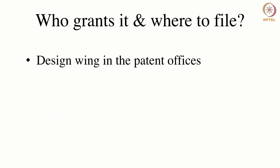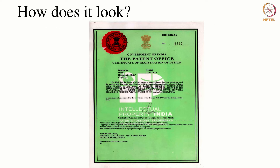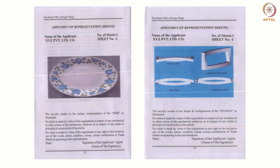The patent office has a design wing which grants the design. The headquarters is in Kolkata and there are branches in Chennai, Mumbai and New Delhi. When a design is granted, the patent office issues a certificate of registration of design, bearing a design number, the date of registration, and the design shown in a graphical representation. There are two examples of how a specimen looks like.